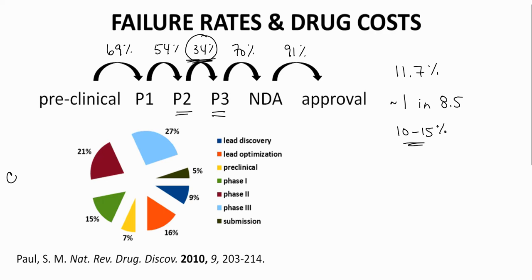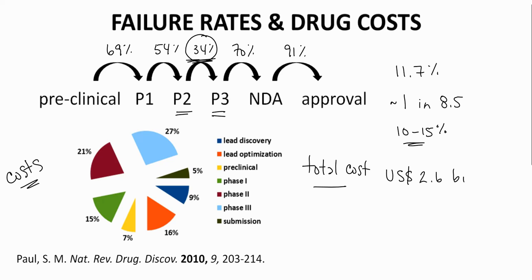Let's look at the costs on the bottom of the screen. The pie chart shows the fraction of total costs based on each development stage. The total cost to bring one drug into the marketplace was estimated as US$2.6 billion by Joseph DiMasi of Tufts University. That figure includes not just the cost of the successful drug, but also the approximately 7.5 other molecules that failed in clinical trials.